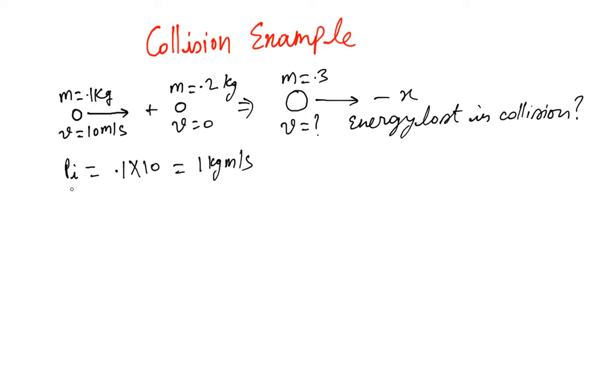How about the final momentum? The final momentum is 0.3 multiplied by v, which is 0.3v. We know that 1 should equal 0.3v, and that gives us v equals 10 over 3 meters per second.